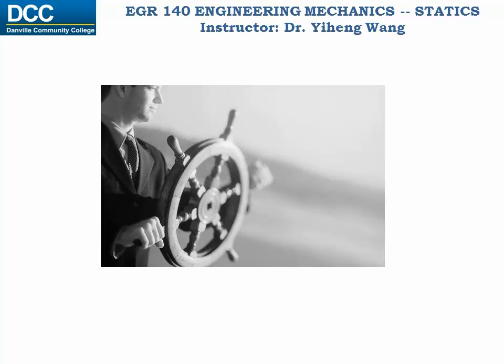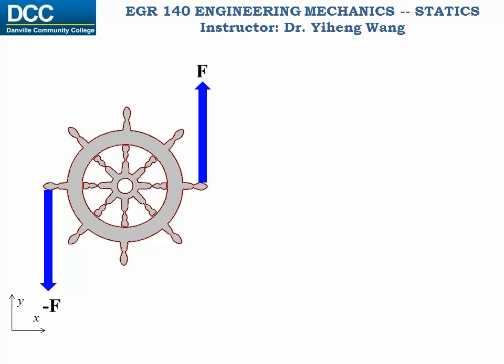When we are turning a wheel, from experience we would normally push with one hand and pull with the other. Let's analyze these two forces. Assume the two forces are of the same magnitude and opposite direction, therefore they can be known as F and negative F, and they each have a perpendicular distance of half d from the center of the wheel, point O.